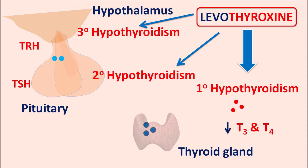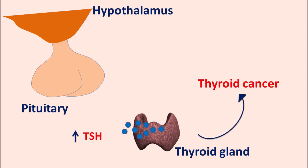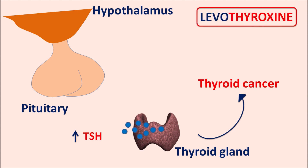Another clinical use of levothyroxine is in thyroid cancer. If the pituitary gland has overactivity, it releases excessive TSH, which excessively activates the thyroid gland and increases the risk of thyroid cancer. In patients with well-differentiated thyroid cancer, levothyroxine can be given to suppress TSH release from the pituitary gland.